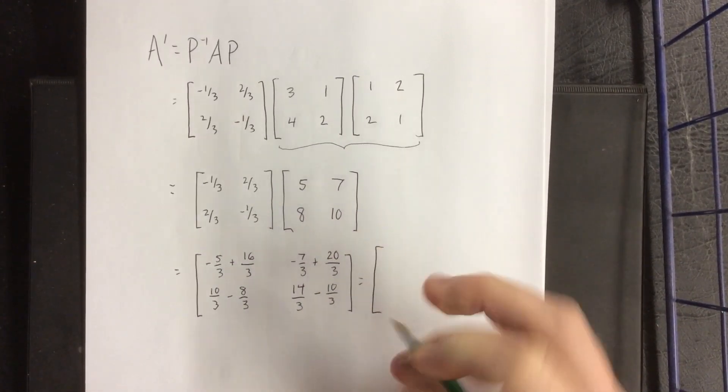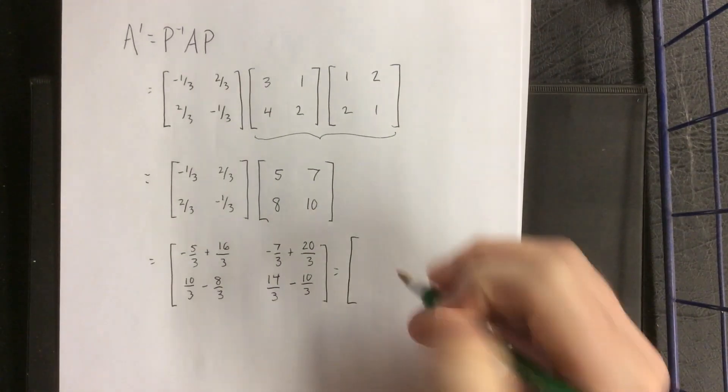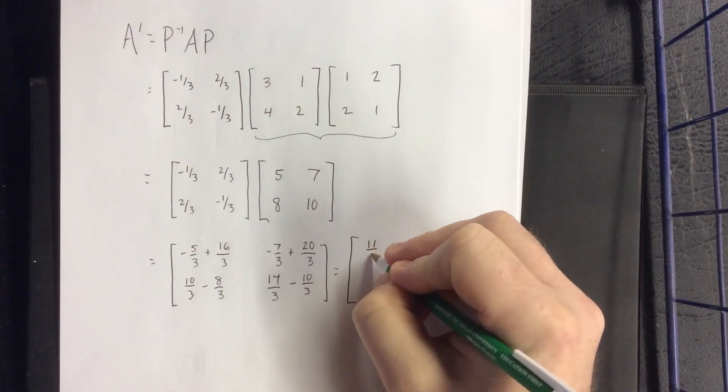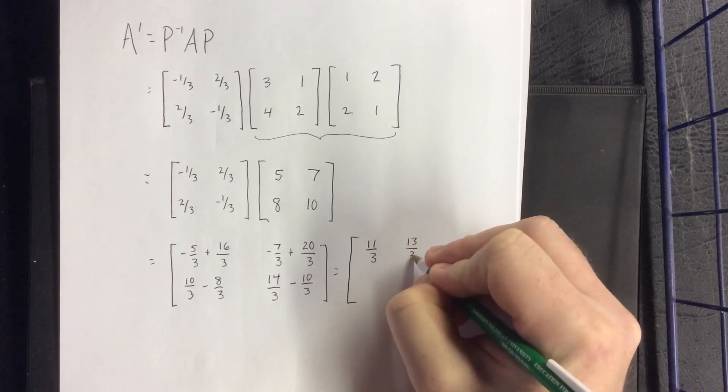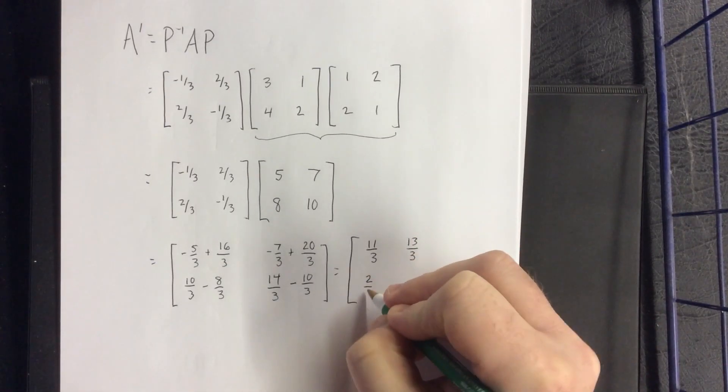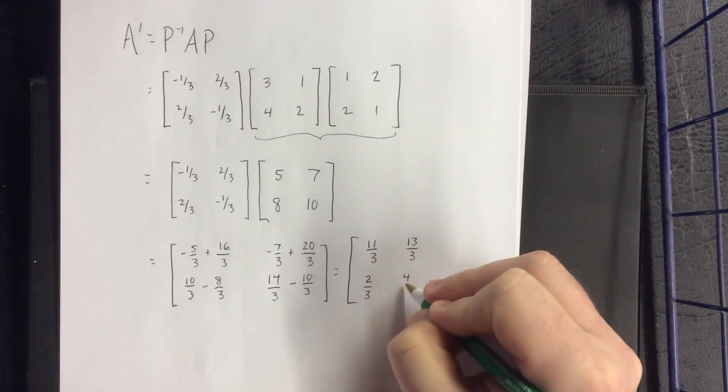Okay, so it's looking like we're going to wind up with a lot of fractions in our answer. That's too bad but sometimes that's just how math goes. So computing the remaining entries: 2/3, 2/3, and 4/3.